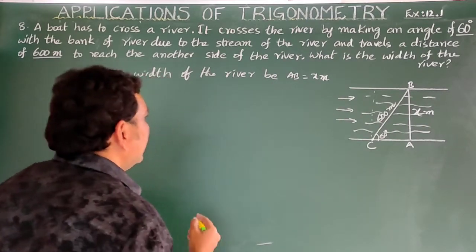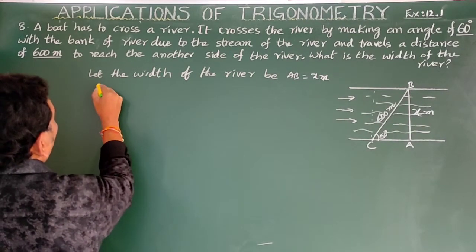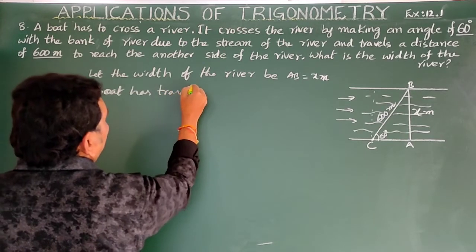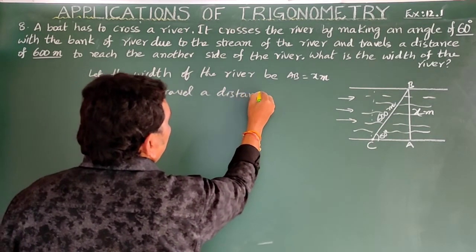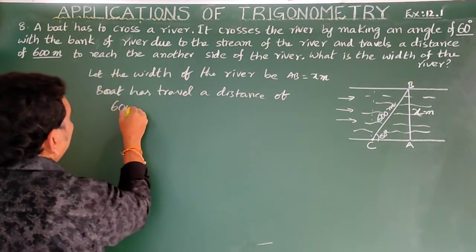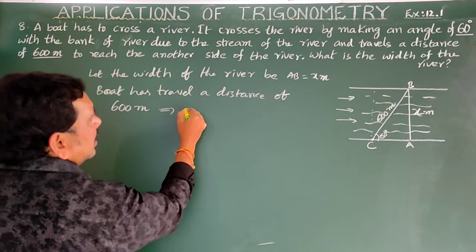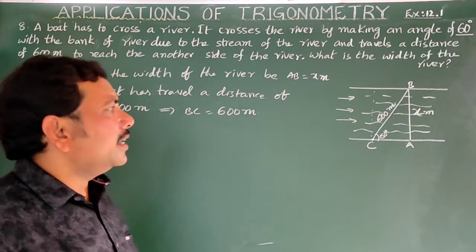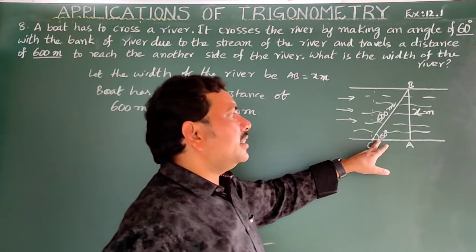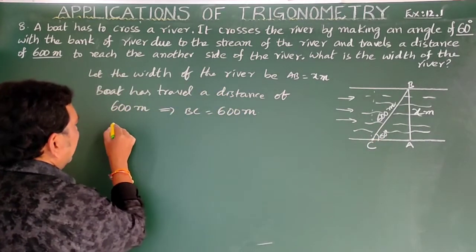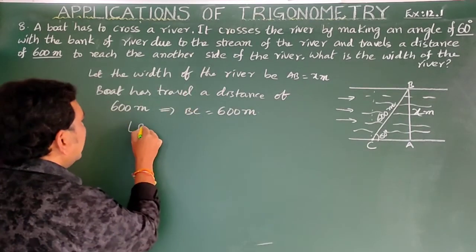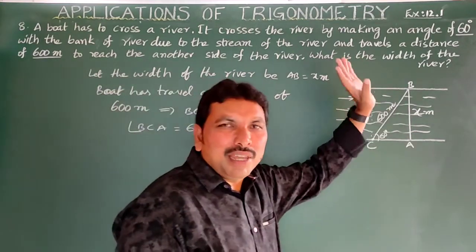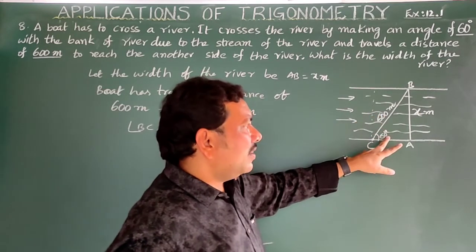The boat travels a distance of 600 meters, so BC = 600 meters. The boat makes an angle of 60 degrees with the bank, so angle BCA = 60 degrees. Now let us find AB.